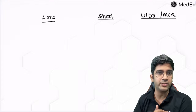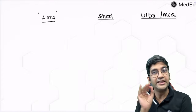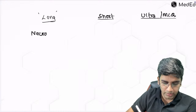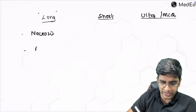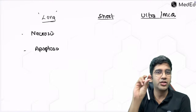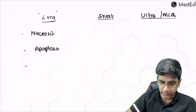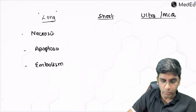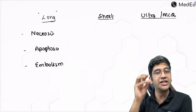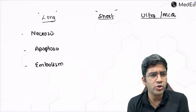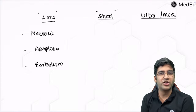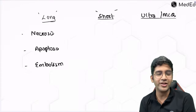From the cell injury and hemodynamics chapters, likely long answer questions are necrosis — patterns and types — and apoptosis. For hemodynamics, thromboembolism is important because it covers pulmonary thromboembolism, air embolism, amniotic fluid embolism, and fat embolism. Shock is also generally a long answer question — both septic shock and hemodynamic shock have very high probability.